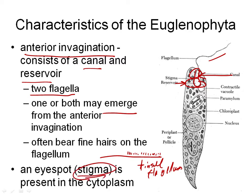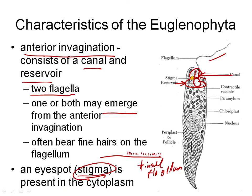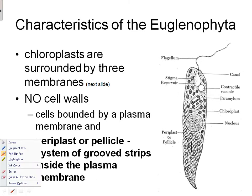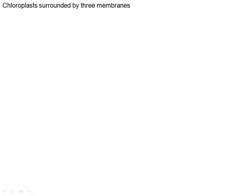There's an eye spot or stigma — stigma means spot. The chloroplasts in this group are really interesting: they're surrounded by three membranes. How many membranes does a normal chloroplast in the Chlorophyta have? It has two — in higher plants, two membranes. We've got three in this case. This is a really significant feature about Euglenophyta that tells us something about the origin of the chloroplast. Yes, we're talking about the process of endosymbiosis.